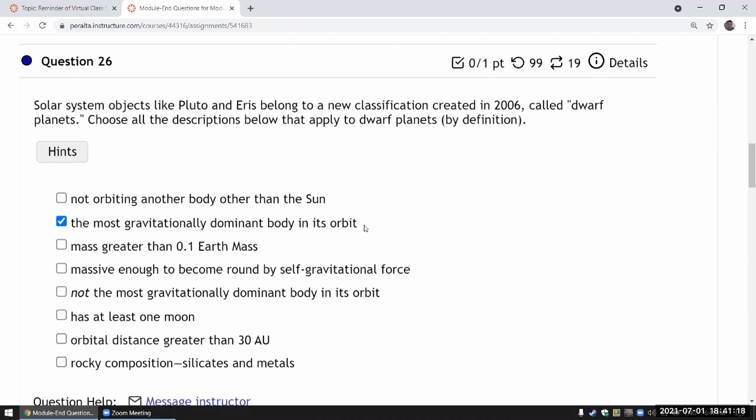There's three more criteria. So it should not orbit another body other than the sun. If it's orbiting, say, another planet, then it's a moon, not a dwarf planet, regardless of the size or other criteria.